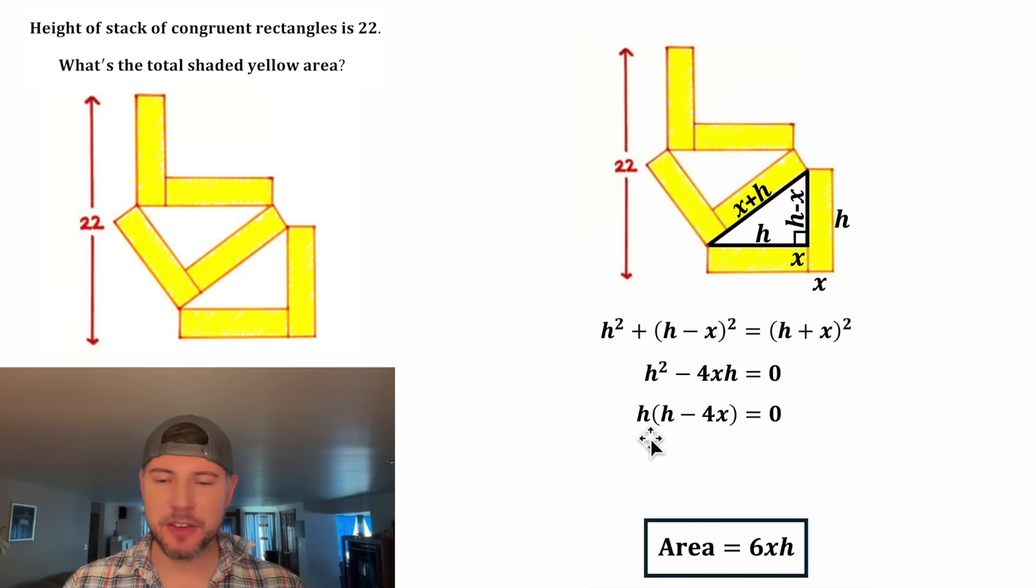From here, anytime you have something times something equals zero, it'll be true if either of those somethings equals zero. So we have H equals zero or H minus 4X equals zero. Since H represents the height of a rectangle that exists, H equals zero is not a possibility.